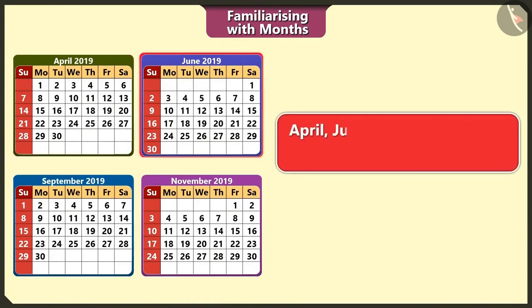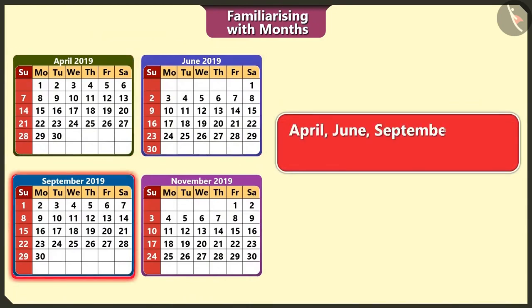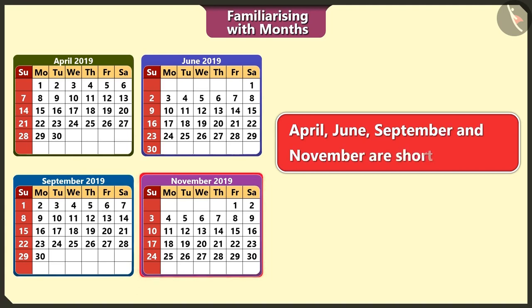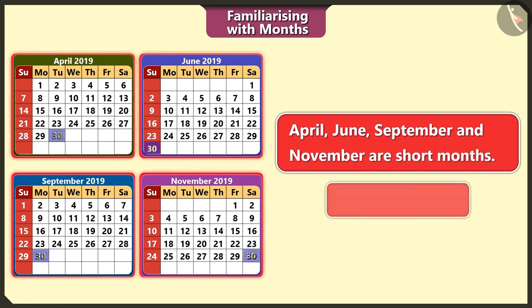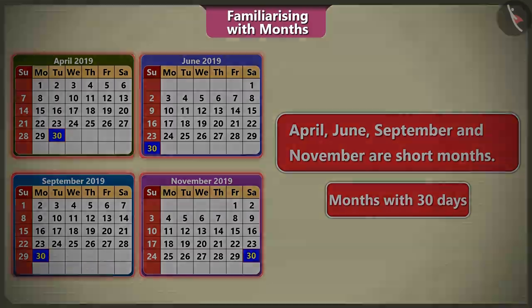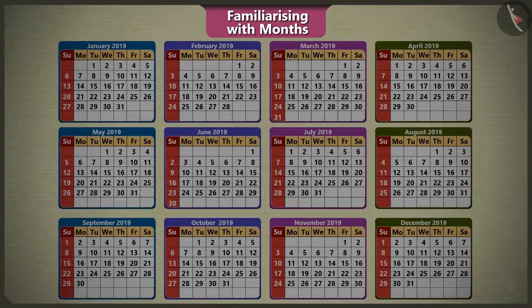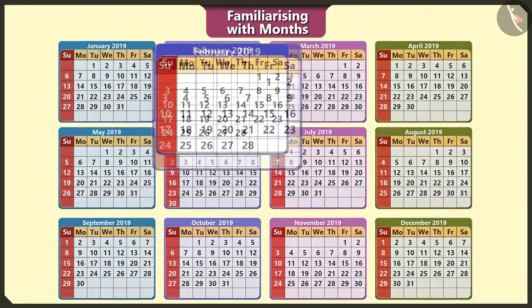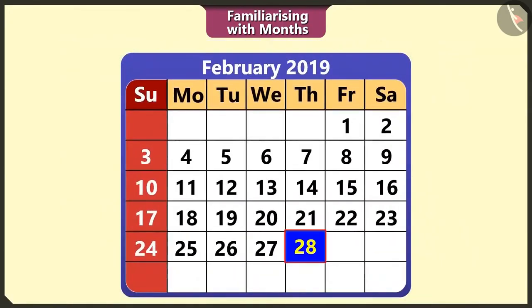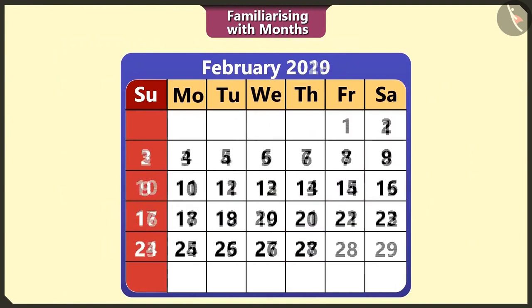April, June, September and November are the short months. There are 30 days in these months. You did not tell how many days are there in the month of February? Chotu, February is the shortest month. Normally, there are 28 days in February.